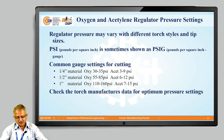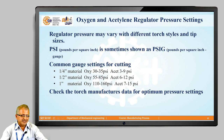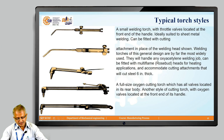The function of a regulator is to reduce the high pressure of gas in the cylinder to a suitable working pressure, and to produce a steady flow of gas under varying cylinder pressure. There are two types: single-stage regulators and two-stage regulators. In a single-stage regulator, pressure is reduced from cylinder pressure to working pressure in one step. In a two-stage regulator, the output of the first stage becomes the input for the second stage, further reducing pressure to the required working level.